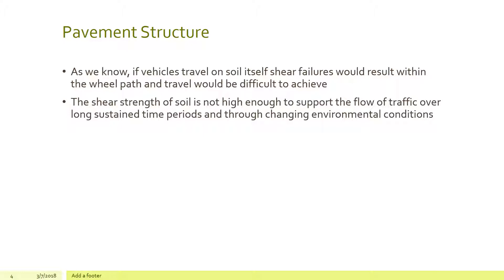The shear strength of the soil is not high enough to support traffic flow over long sustained time periods and through changing environmental conditions. Many old road systems were originally wagon train paths — horse and buggy routes — that were later paved. Even then, rutting occurred because the soil didn't have the strength to hold up the imposed load. We want pavement structures that create a strong, solid surface that vehicular traffic can flow over without failure.